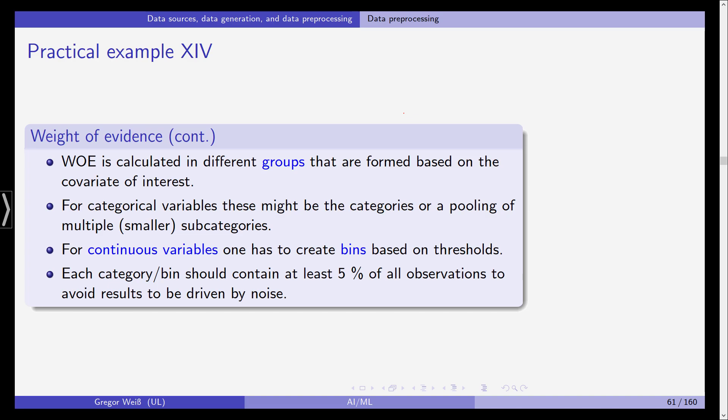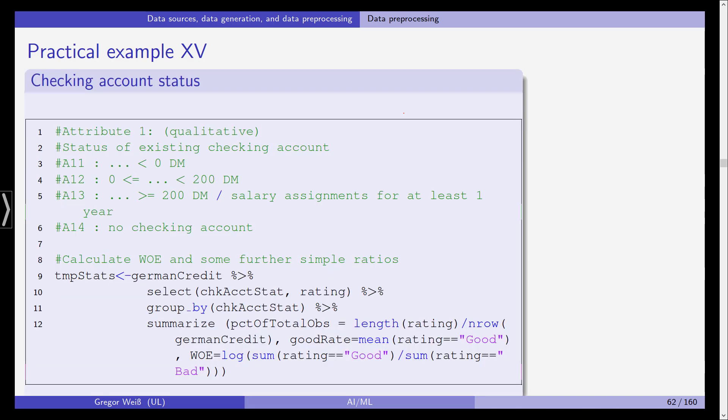So for continuous variables, one has to create bins based on thresholds. For example, you could say income from 0 to €40,000, €40,000 to €80,000 and everyone who has an income higher than €80,000 per year. Each category bin should contain at least 5% of all observations to avoid the results being driven by noise or outliers. So there need to be enough observations in each and every bin.